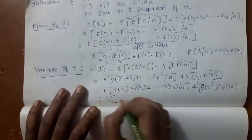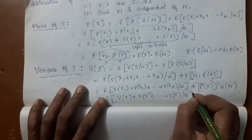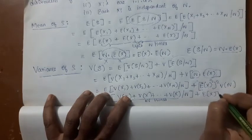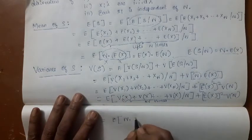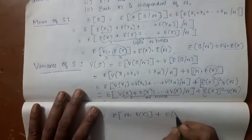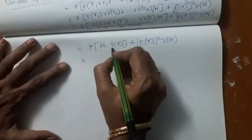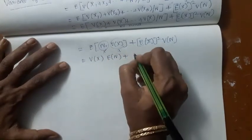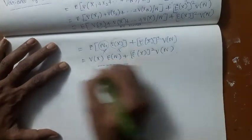Since all Xi's are IIDs, their variances are all equal — say equal to Var(X). For N terms the sum is N · Var(X), so after taking expectation we get E[N] · Var(X). The full variance formula is: Var[S] = Var(X) · E[N] + (E[X])² · Var(N).